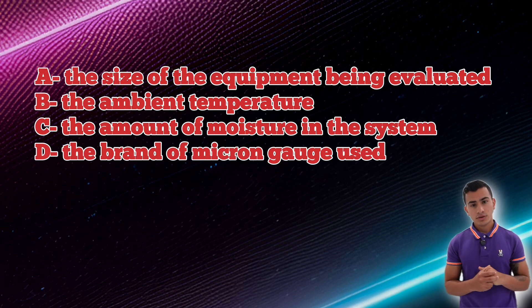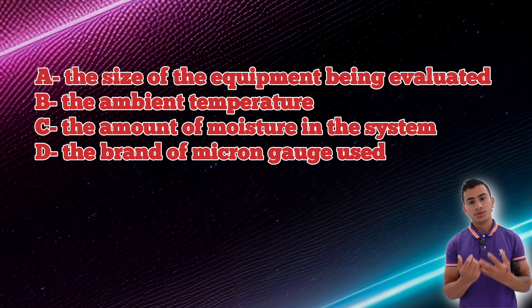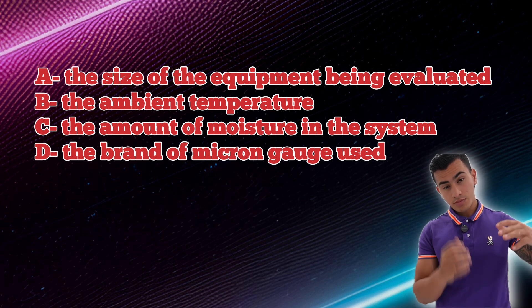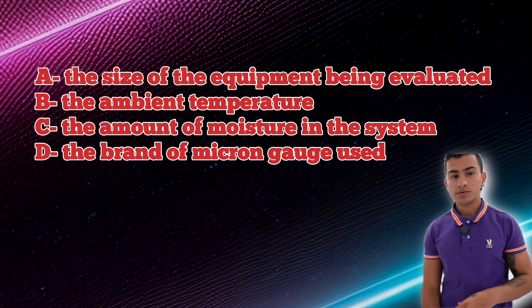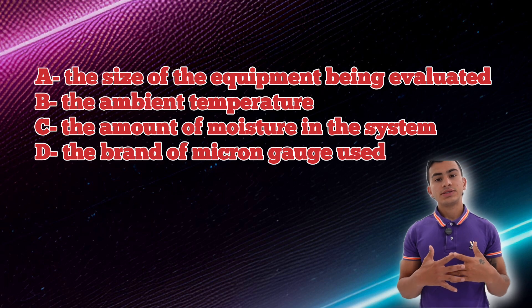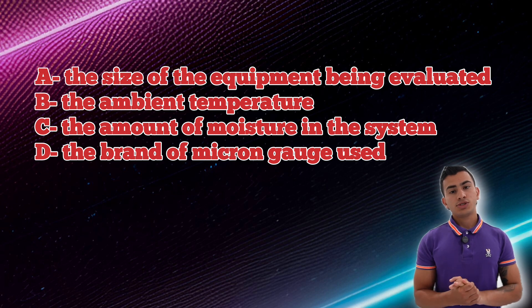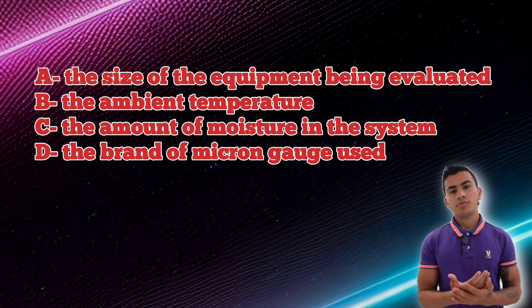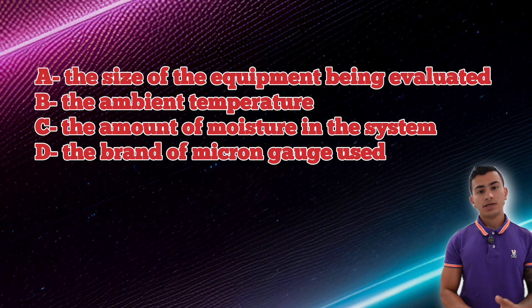Which factor does NOT affect the speed of recovery? The size of the equipment being evacuated — that will affect it, because the bigger the equipment, the longer it takes and the more refrigerant it has. Ambient temperature — yes, that affects it; if temperature goes up, pressure goes up. The amount of moisture in the system — that is the number one factor; if you have moisture, recovery speed is tremendously affected. The brand of micron gauge used — no, that will not affect it because it is just a brand. So the answer is the brand of micron gauge.